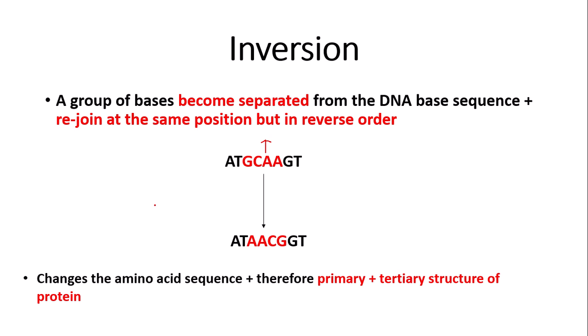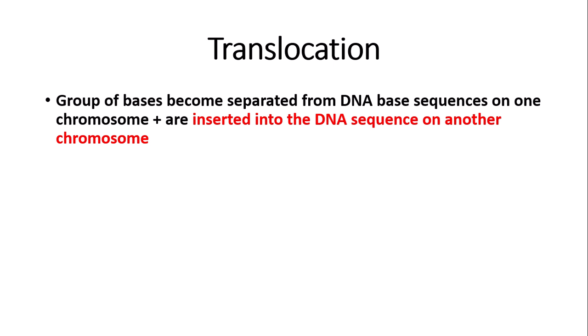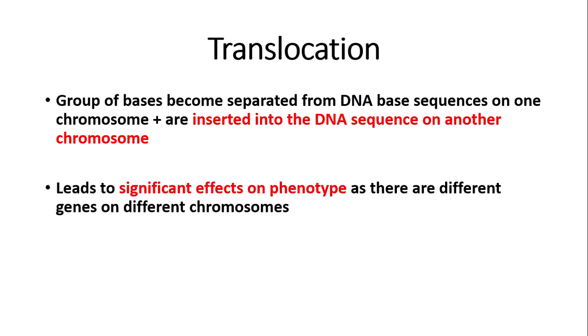The last type of mutation you need to know about is called translocation, which will also be new for A2. Translocation mutations are when a group of bases become separated from the DNA base sequence on one chromosome — just like inversions — however they are inserted into the DNA sequence on another chromosome entirely. This obviously leads to a significant effect on the phenotype, as there are different genes on different chromosomes.